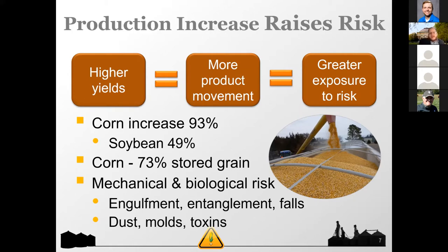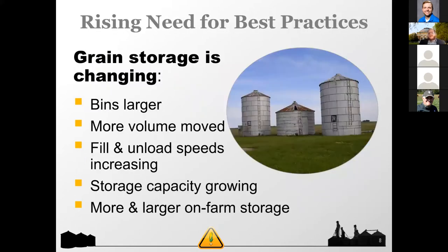For example, corn yields over the last 30 years have increased by 49%, and 70% of the grain is being stored. That's what we are seeing going on in the U.S. today, and that leads to a rising need for best practices. This is why we do this presentation — as grain bins get larger and more volume is being moved, we have to have a standard set of ideas for how to tackle grain storage issues to keep our workers and farmers safe.